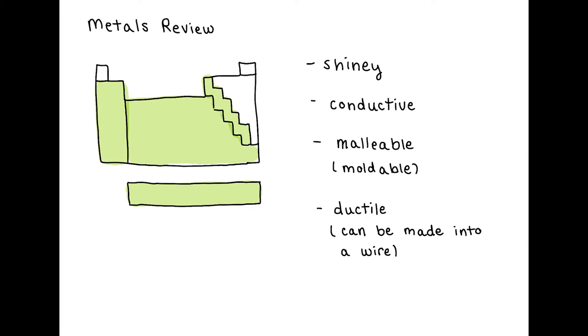Recall that common characteristics of a metal are that they're shiny, they're conductive which means they conduct electricity, they're malleable or moldable, and they're ductile which means they can be strung out really thin and made into a wire.